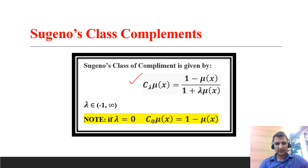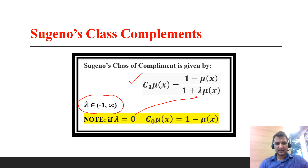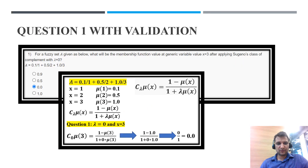For Sugeno's class of complement, the formula has a parameter lambda, and lambda values lie in the range from minus 1 to infinity, but minus 1 and infinity are not included. One more specific thing about this formula is that if lambda becomes 0, it becomes a simple complement — just subtracting the membership function value from 1.